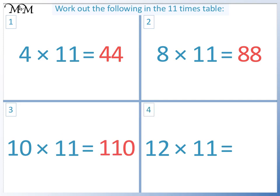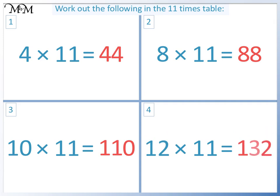Question 4: 12 times 11 starts with a 1 and ends in 2, like 12 does. 1 plus 2 equals 3. So 12 times 11 equals 132.